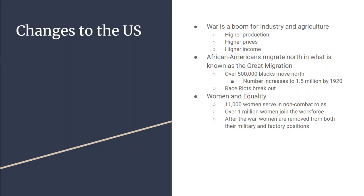This is going to cause some problems — competition and resentment with Northern whites, and also competition when soldiers return from Europe. It gets so bad that race riots break out in places like Chicago, New York, East St. Louis, and Detroit. The worst of those riots is actually in Chicago in 1919.